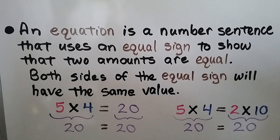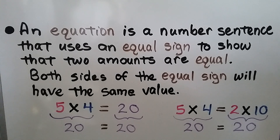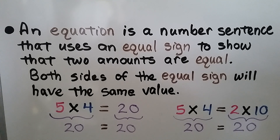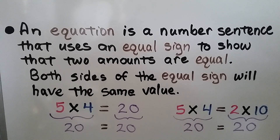An equation is a number sentence that uses an equal sign to show that two amounts are equal. Both sides of the equal sign will have the same value. For example, 5 times 4 is equal to 20. We have 20 on both sides of the equal sign.